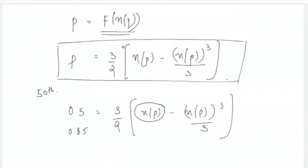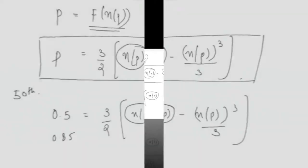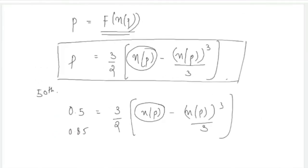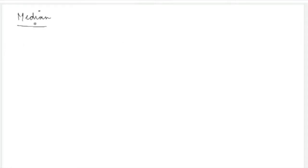You can also get a reverse question: if you are given the value of η_p — the value of the random variable — and need to calculate which percentile it corresponds to in a given distribution. This is the reverse problem.